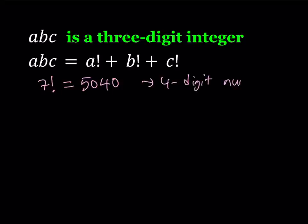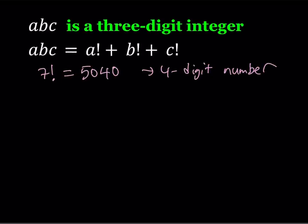So that means that none of these digits can be a 7, right? Because that's going to give us a larger number. So all these digits then, ABC, needs to be less than or equal to 6.